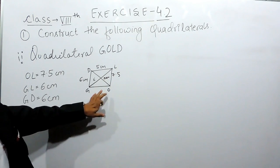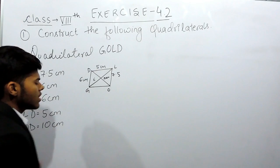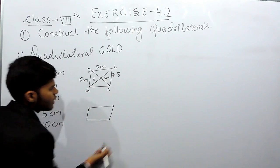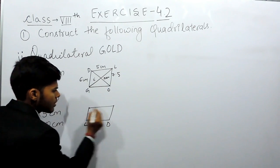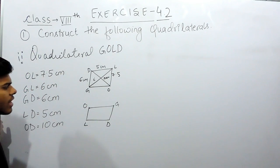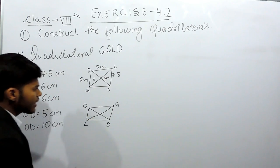Now you can see that if we name the figure like this, the base GO is not given to us. So we can change this and name it like GOLD. Now this is our figure. This will be the diagonal, and this will be the diagonal.